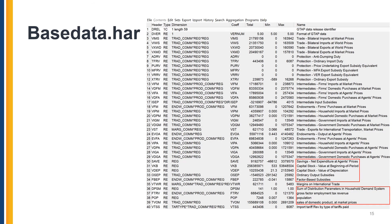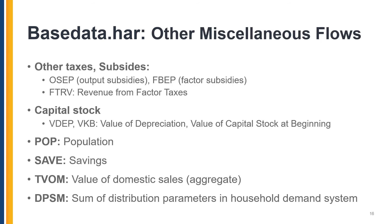We now turn to all remaining flows in the database that do not fall under any of the previous categories. We have domestic taxes and subsidies: OSEP and FBEP are output and factor subsidies. FDRV is a revenue, as indicated by the RV, but this is taxes on factors. Capital-related coefficients are VDEP, the value of depreciation, and VKB, the stock of capital at the beginning of the period. POP is population. Save is the value of savings. TVOM is the aggregate value of domestic sales in a region. And finally, DPSM is the sum of distribution parameters in the household's demand system.